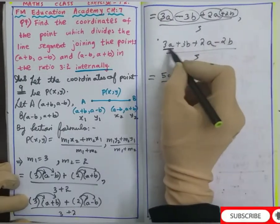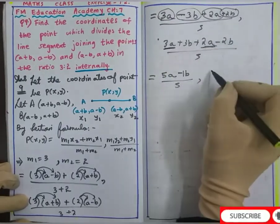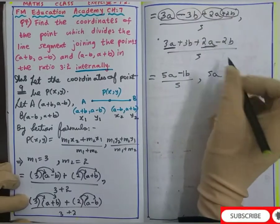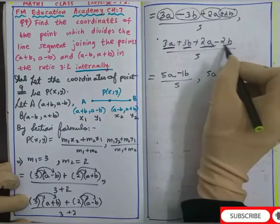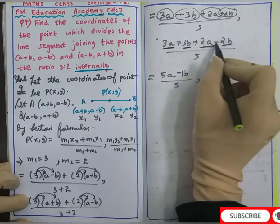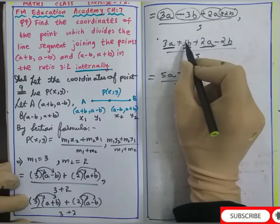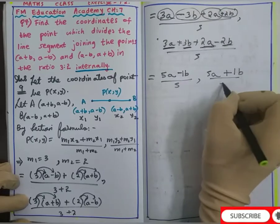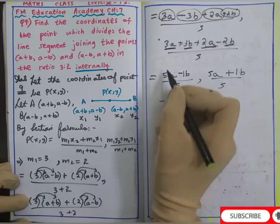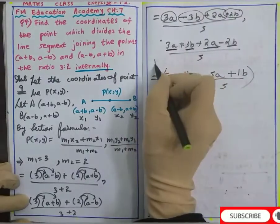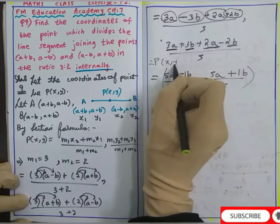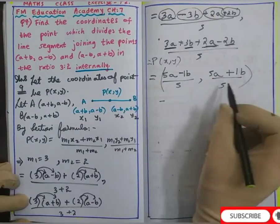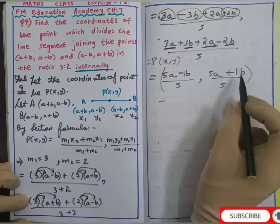Here again the coefficient of a is 3 and 2. So 3 + 2 is 5a. The coefficient of b is 3 and -2. One is plus one is minus, so we subtract. 3 - 2 is 1b by 5. Therefore P(x,y) equals (5a - b)/5 comma (5a + b)/5.